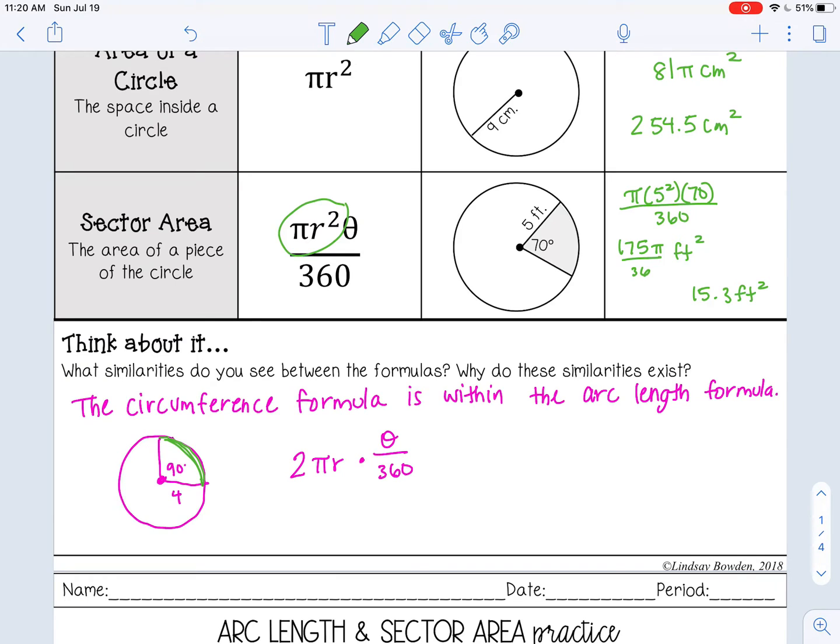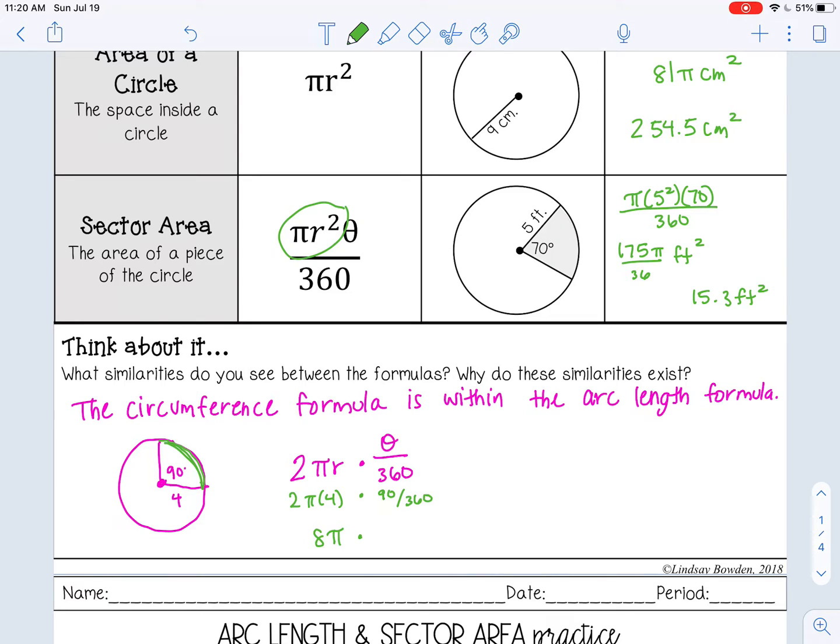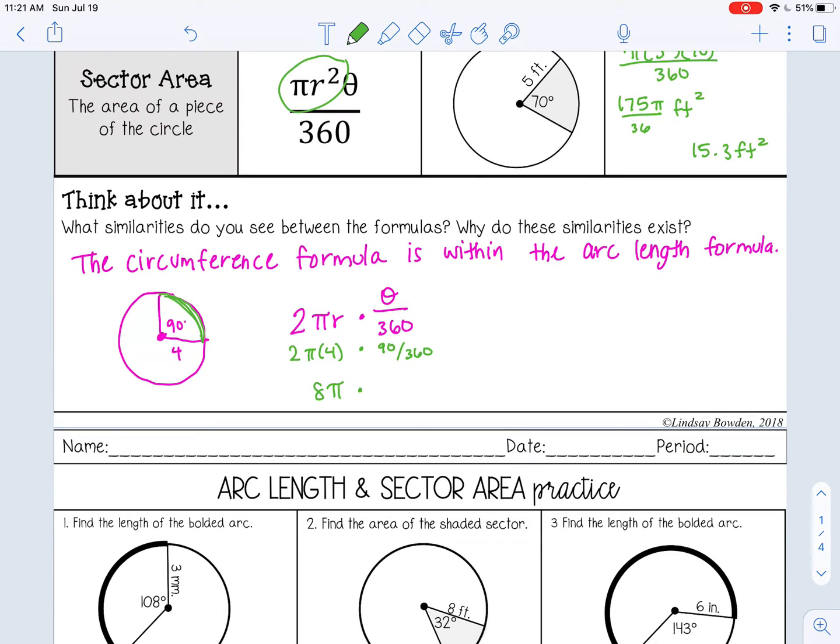I want the length of this arc here. So I want to find the whole circumference first: 2 times π times r. So 2 times π times 4, which would be 8π. That's the whole circumference, but I don't want the whole thing. I just want a piece of it. So the piece that I want is θ over 360. My θ is 90 over 360. Now, if you look at the picture that I have, you can tell that it's a fourth of the circle. So we just want one fourth of the whole circumference. And if you reduce 90 over 360, you get one fourth. So really the θ over 360 just tells you how much of the circumference you want.